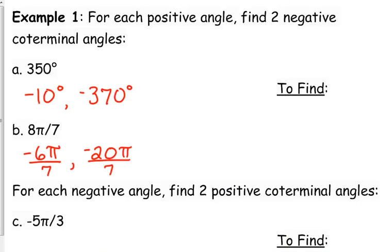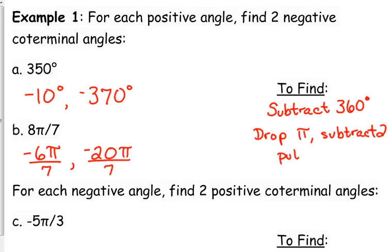So, to find negative coterminal angles, you either subtract 360 if it's in degrees, or for radians, drop the pi, drop pi, subtract 2, put pi back in your answer. When you're looking back at this and you're trying to figure out, how did I get negative 6 over 7, negative 6 pi over 7, you can see exactly what we did.